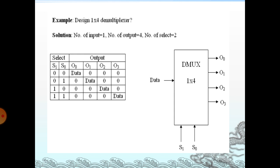This slide shows the truth table for the demultiplexer — that is a 1-to-4 demultiplexer. Here the number of inputs is S1, number of outputs is 4, and we have 2 selection lines S0 and S1. We have 4 combinations: 00, 01, 10, 11, and the outputs are O0, O1, O2, O3.